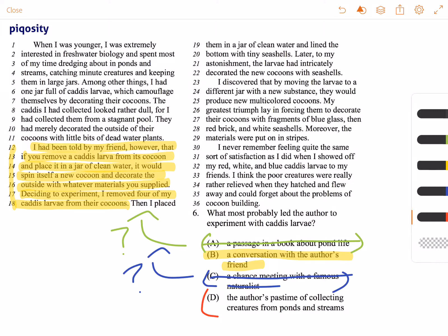And then D: the author's pastime of collecting creatures from ponds and streams. So here's the issue: he just likes to catch these creatures from ponds and streams, but that has never led him to do experiments before, nor is that even mentioned in the passage that he did experiments with the creatures that he collected.